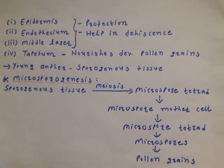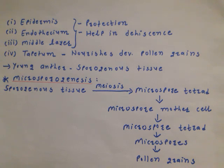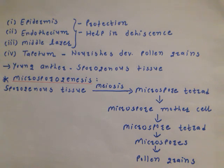Now the microsporogenesis process. In this mechanism, microspores and pollen grains develop from sporogenous tissue. First, sporogenous tissue undergoes cell division — meiosis — which means reduction division. From 2N, the N structure is formed. Sporogenous tissue divides and microspore tetrads are formed. From the microspore tetrad, further cell division takes place and microspore mother cells develop, then microspore tetrads develop, and from the microspore tetrad, microspores develop. At maturity, pollen grains are formed.